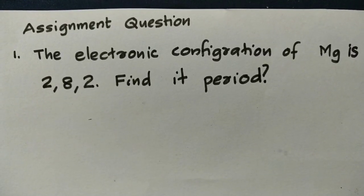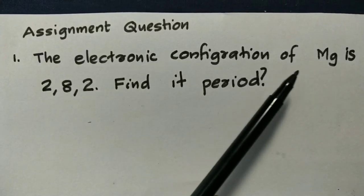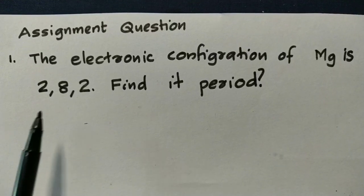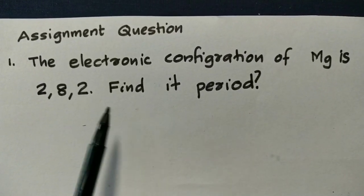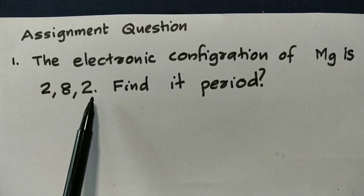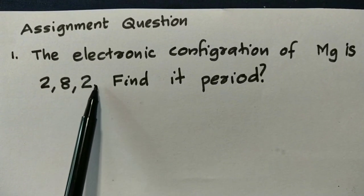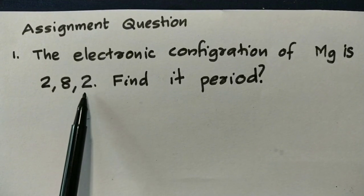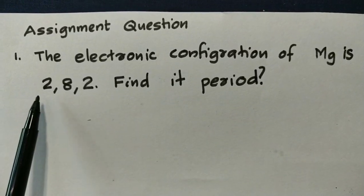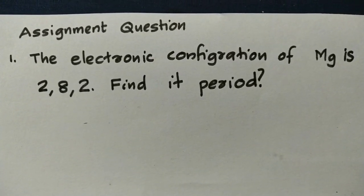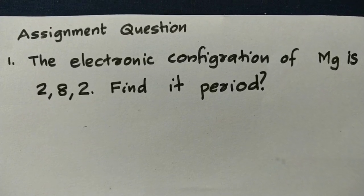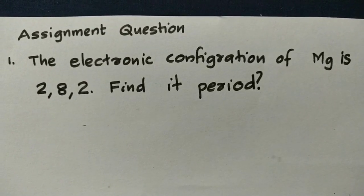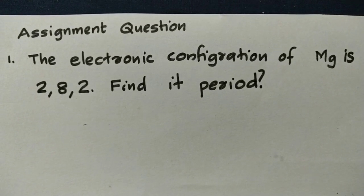The electronic configuration of magnesium is 2, 8, 2. The period number equals the number of shells, so it is period 3. The group number equals the outermost shell electrons, so the group number is 2. Please comment below and share the video.